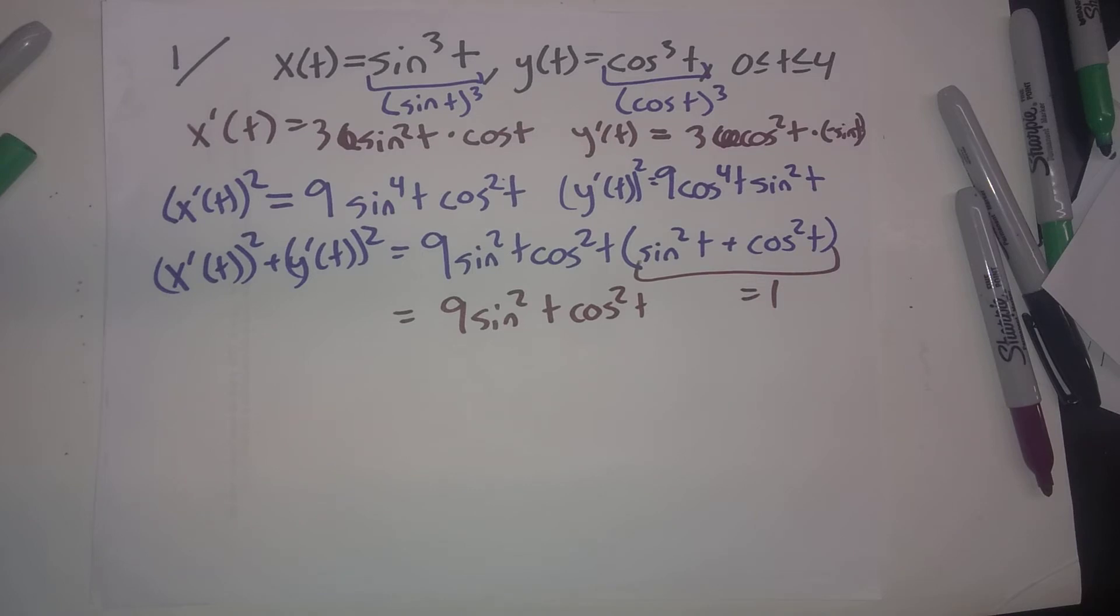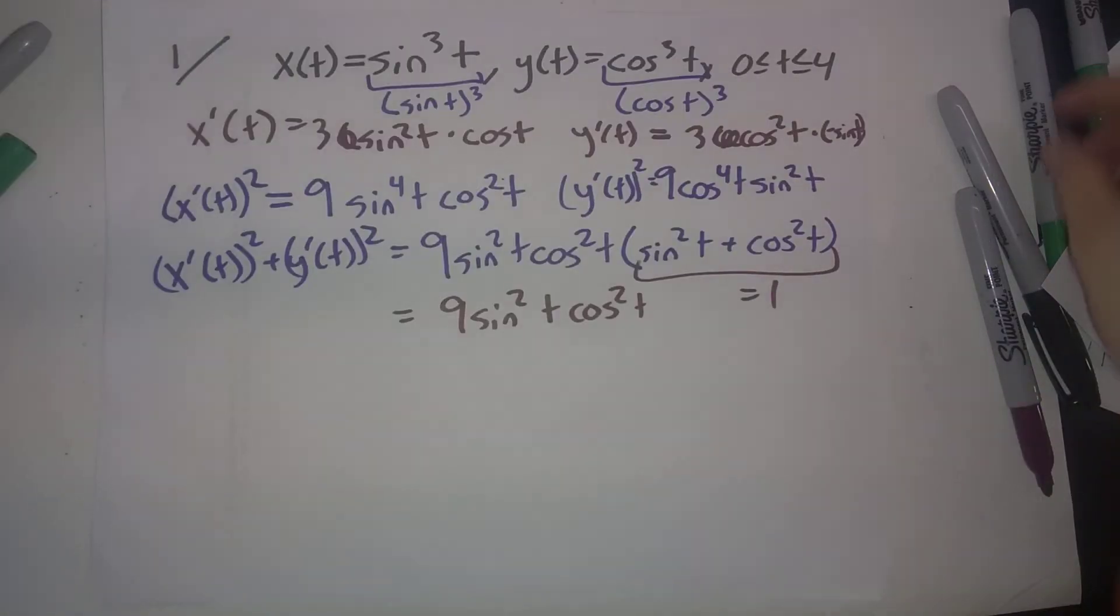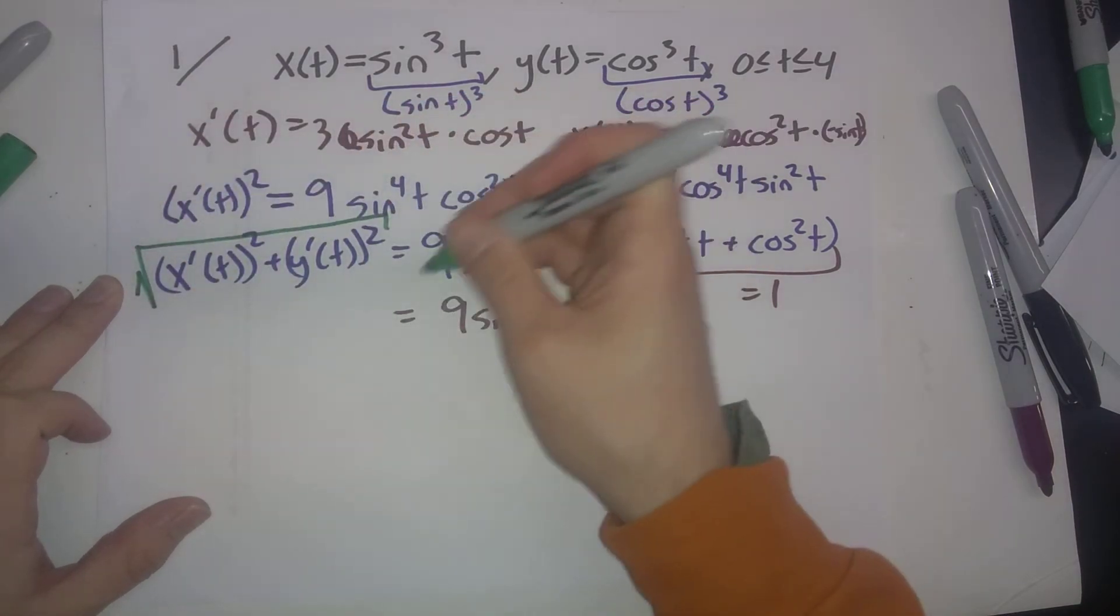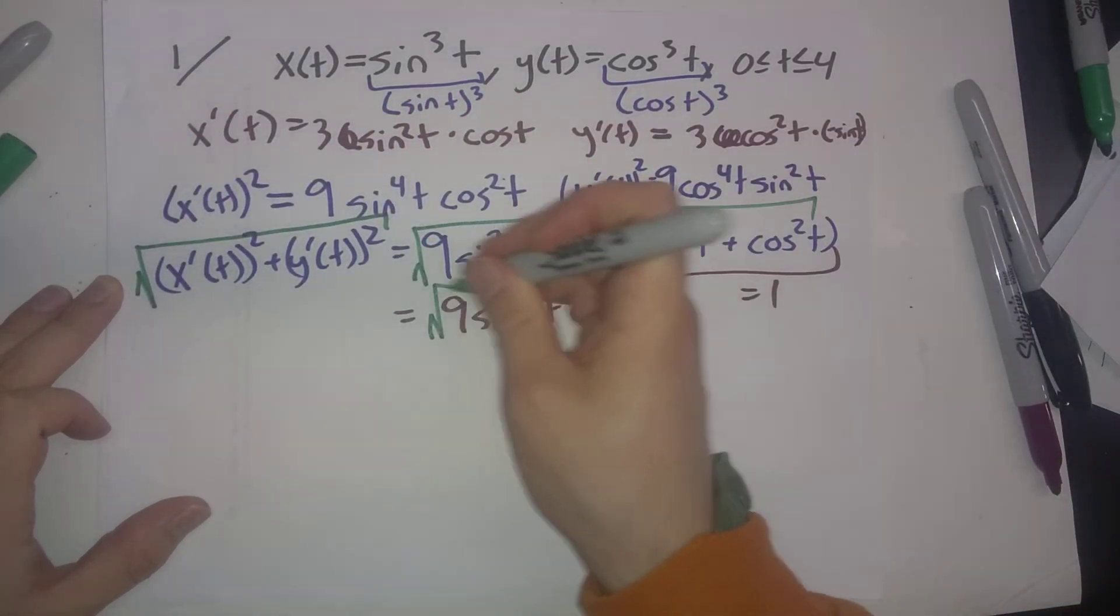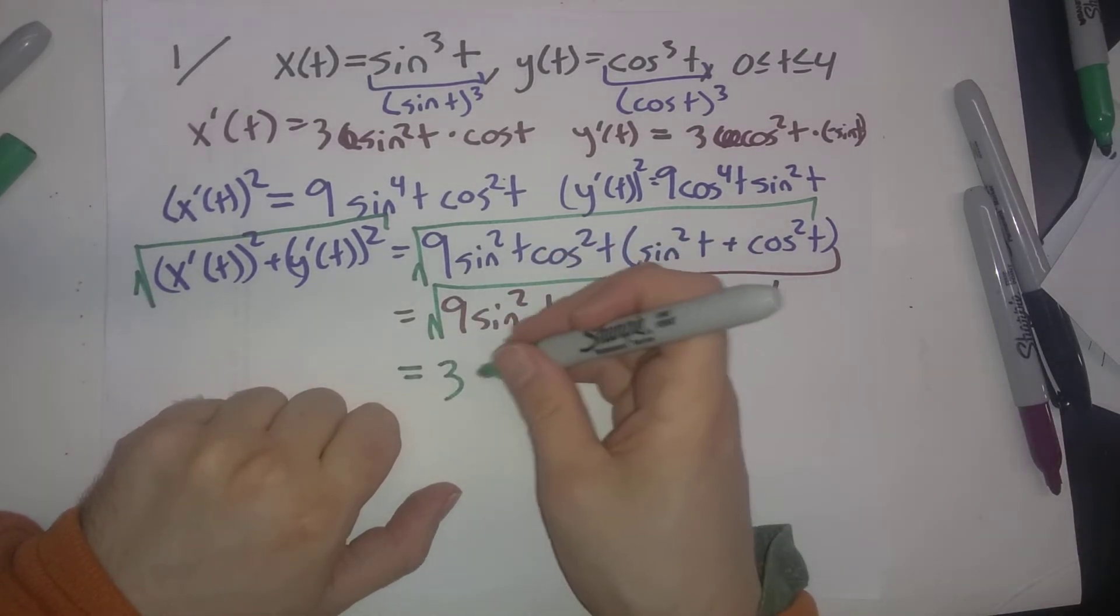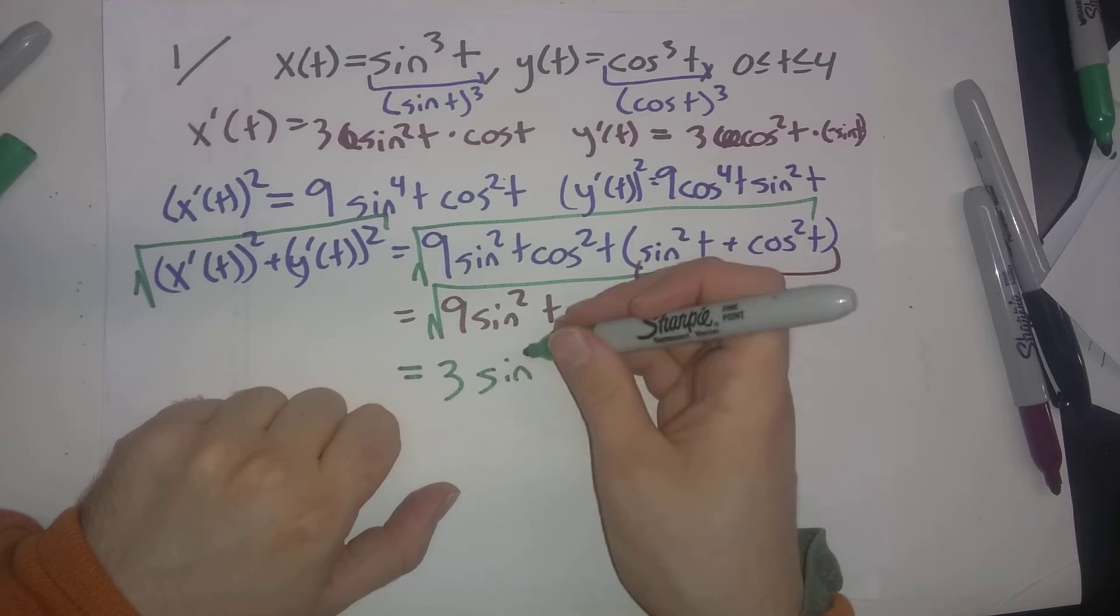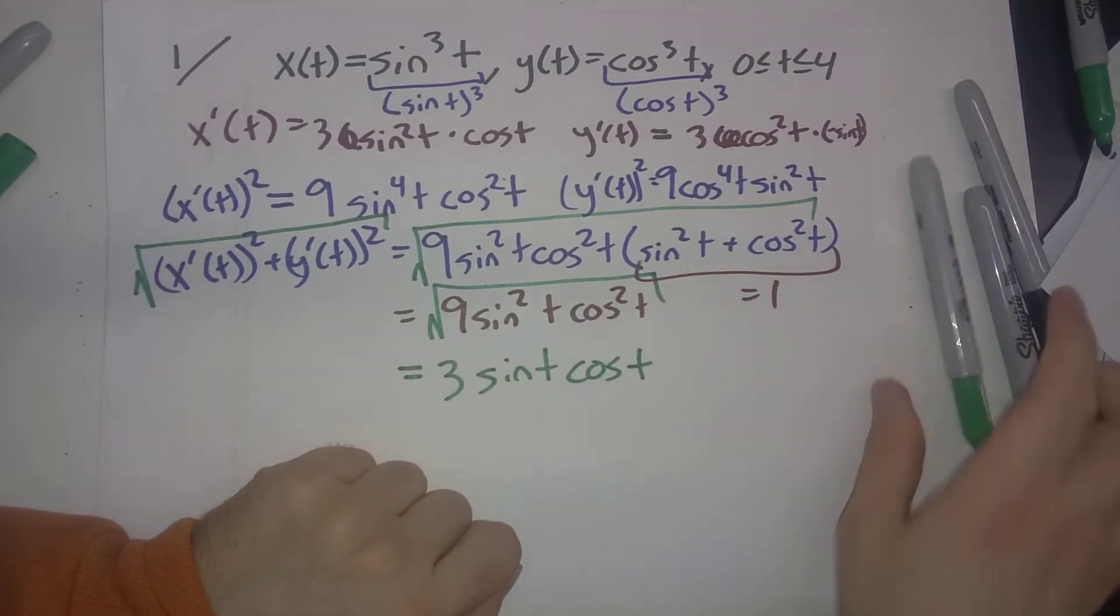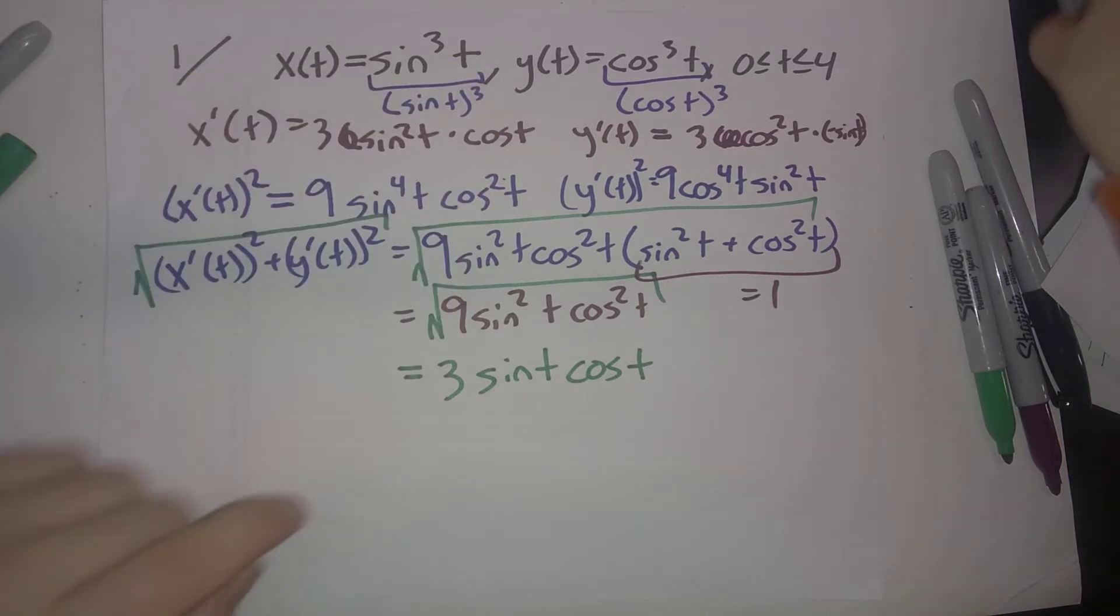At this point, we care about not the sum of the squares, but the square root of that. This gives us √9 = 3, √(sin²t) = sin t, and √(cos²t) = cos t. We would have to be careful about plus or minus, except—I made a mistake way back at the start.